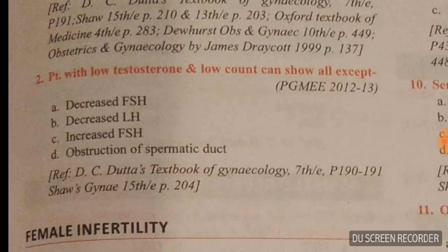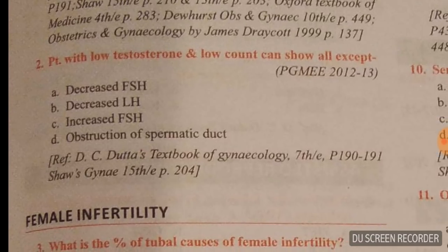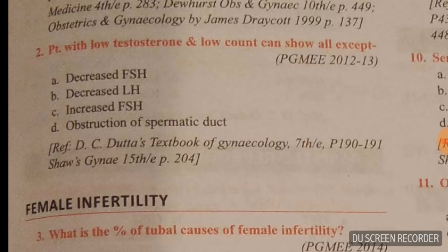In this hormonal disturbance case with low testosterone: option A is decreased FSH, option B is decreased LH, option C is increased FSH. They are asking 'except,' so decreased FSH, decreased LH, and increased FSH can all occur. But there is no obstruction of the spermatic cord, so option D is the right answer.